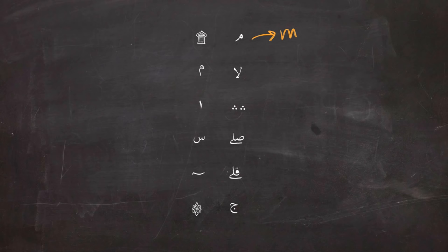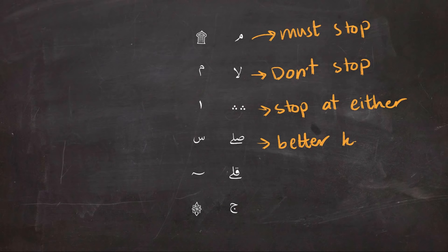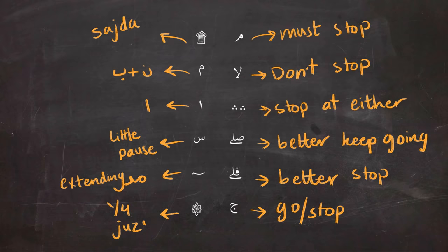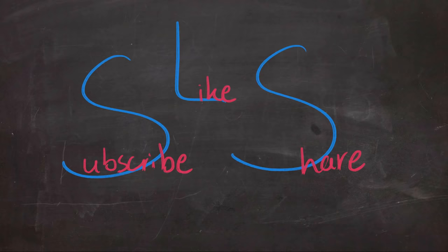So these were the 12 signs that you are going to see in the Quran, and here I'm going to give a quick summary of what these signs mean. Try to remember them, and of course the best way to learn them is by reading a lot of Quran because practice makes perfect. This is going to be the end of today's lesson. I hope you've learned something new today. If you did, like and share the video for other people to learn from it, and I'll see you next lesson.